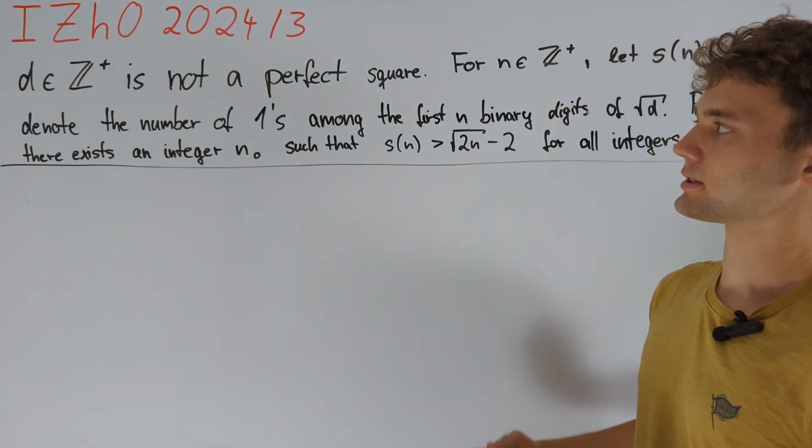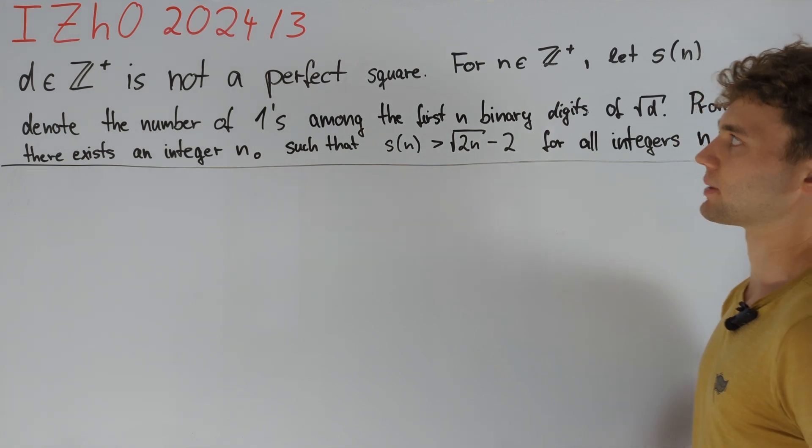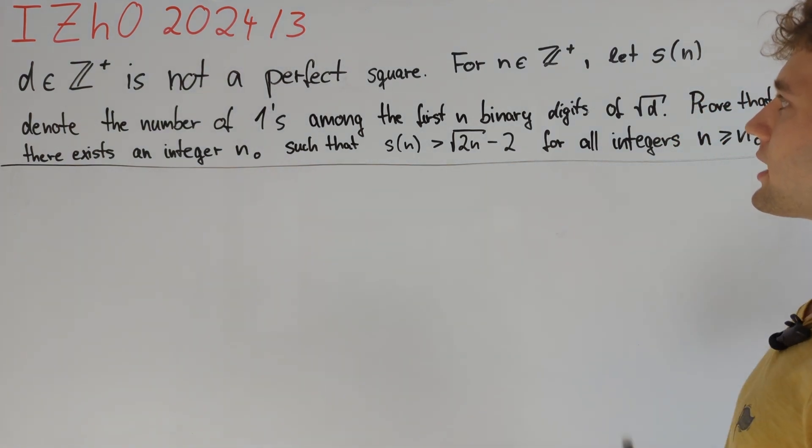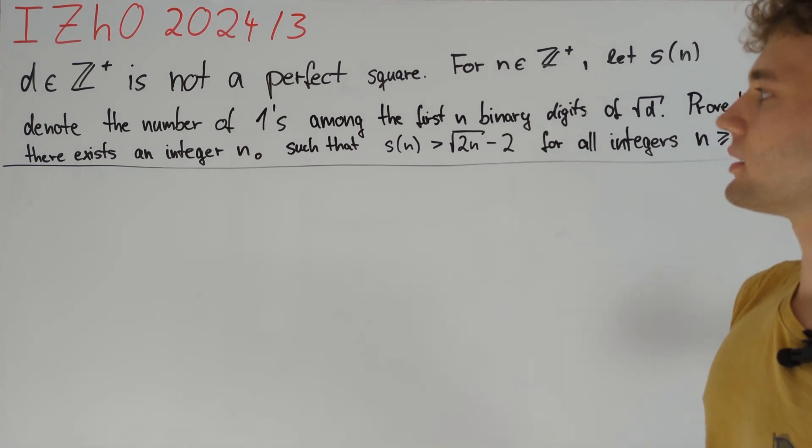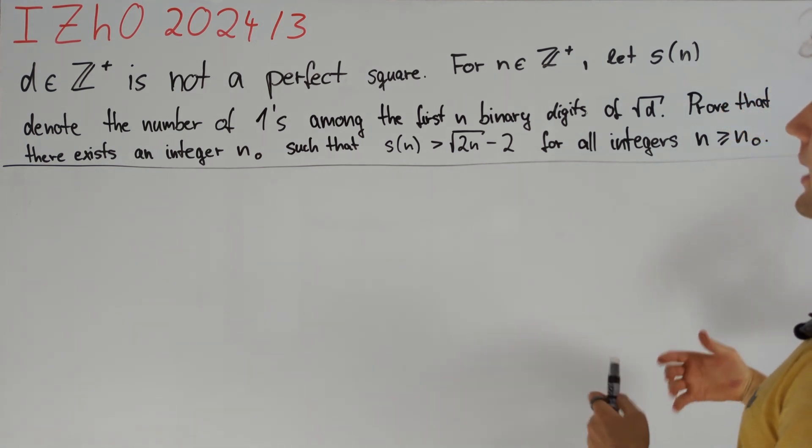Let d be a positive integer that is not a perfect square. We define for any positive integer n, s(n) to be the number of ones among the first n binary digits of the square root of d.